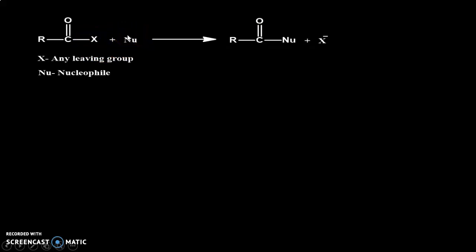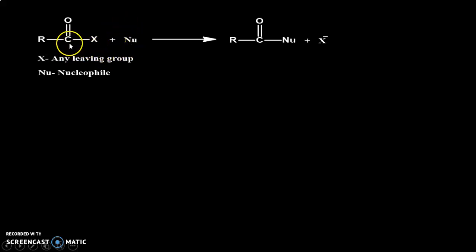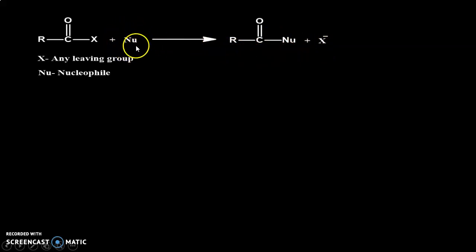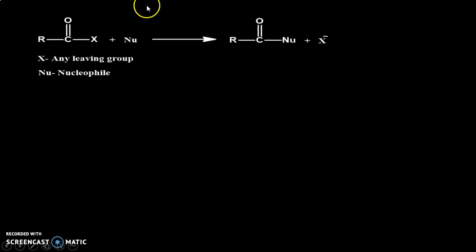The nucleophile has a lone pair of electrons or a negative charge — nucleophile means any species which has a lone pair of electrons or negative charge. So this nucleophile attacks on this electron-deficient carbon. After attack, the leaving group X departs, and the nucleophile takes its place. So substitution of the nucleophile is occurring on the acyl group, which is why we call this the acyl nucleophilic substitution reaction.